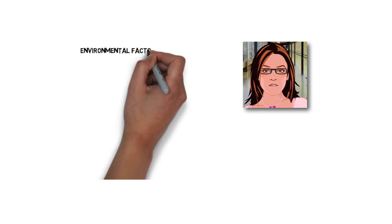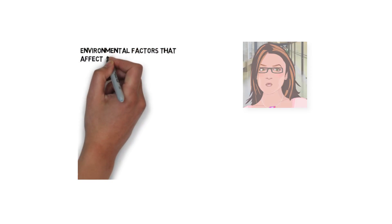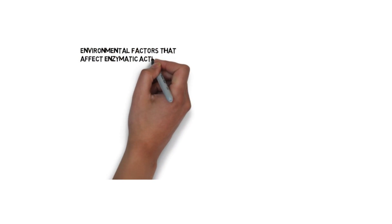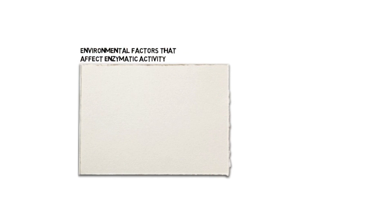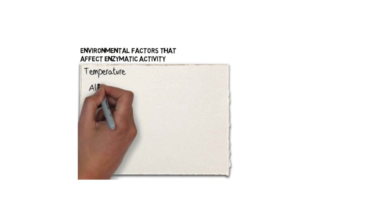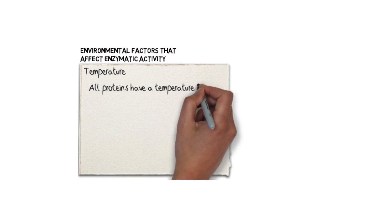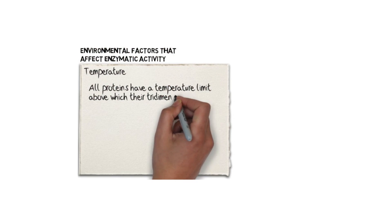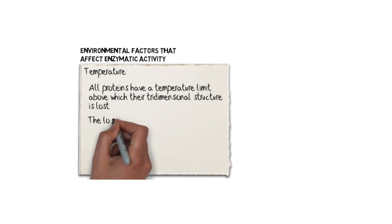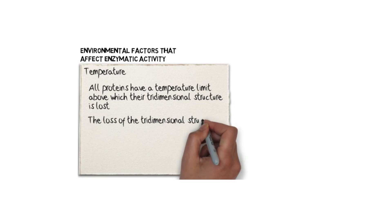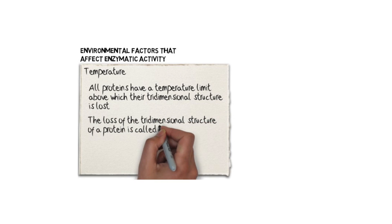Let's review some of the environmental factors that can affect how enzymes work. Temperature is an important factor that affects enzymatic activity. All proteins have a temperature limit above which their three-dimensional structure is lost. The loss of the three-dimensional structure of a protein is known as denaturation.